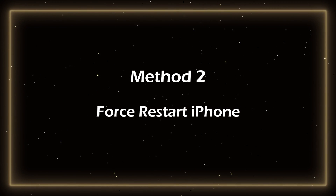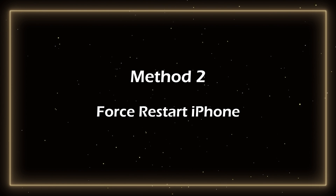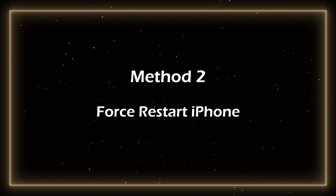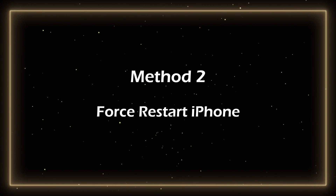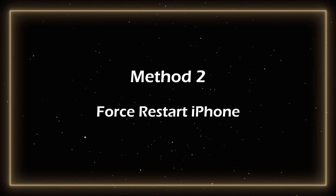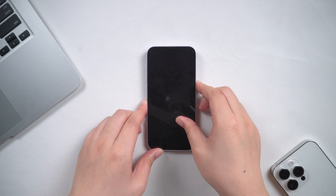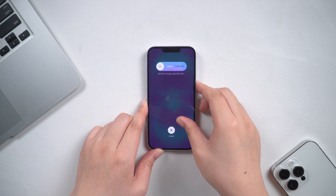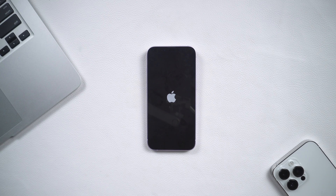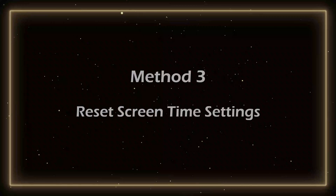Method 2: Force Restart iPhone. Many iPhone system problems can be solved by restarting the phone. Press the Volume Up button and the Volume Down button, then release it. Press and hold the Power button until the screen turns black. The iPhone has been force restarted.